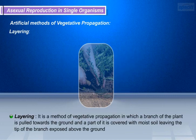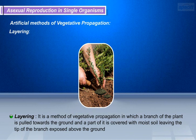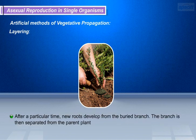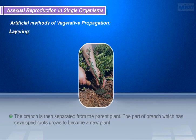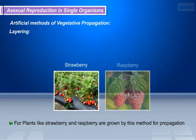Coming to layering — it is a method of vegetative propagation in which a branch of the plant is pulled towards the ground, and a part of it is covered with moist soil, leaving the tip of the branch exposed above the ground. After a particular time, new roots develop from the buried branch. The branch is then separated from the parent plant, and the part with developed roots grows to become a new plant. Plants like strawberry and raspberry are grown by this method.